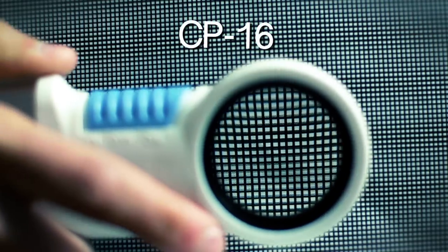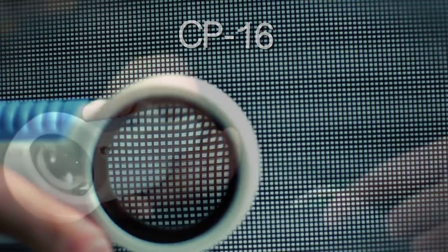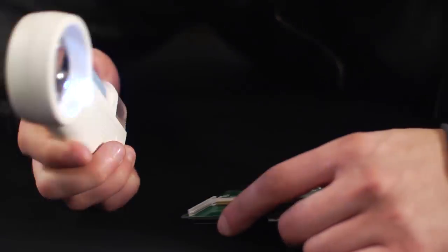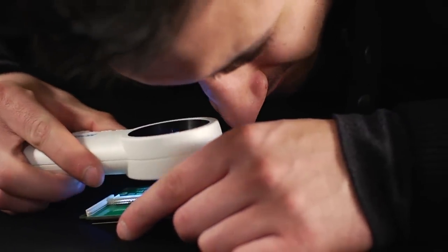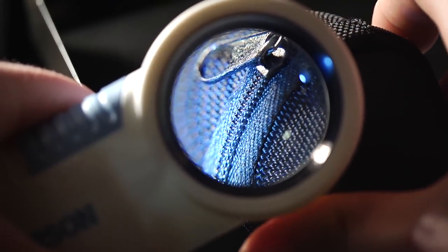The CP16 is a five power magnifier that's great for inspection and reading small print that can sometimes be difficult to see. If your eyesight just isn't what it used to be, the MagniFlash is here to help.